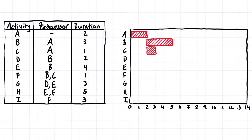Next, we're going to move on to activity D. Activity D can't start until activity B is finished, and it's two days long, so we find where activity B finishes and come down to activity D — that's where we're going to start — and this is two days, so we'll come over two.